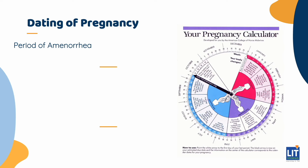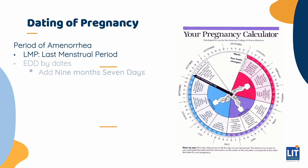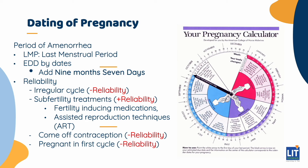Dating of pregnancy can be done in two ways. The first way is from the period of amenorrhea, using the first day of her last menstrual period. You can calculate the expected date of delivery, EDD, by either adding 9 months and 7 days, which is the natural history, or using the pregnancy calculator wheel. If you align the last period arrow with the date she gives you, the EDD arrow will point to her expected date of delivery. Nowadays, computer software can also give you the due date.